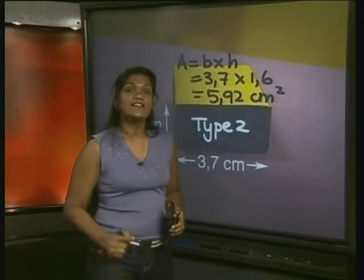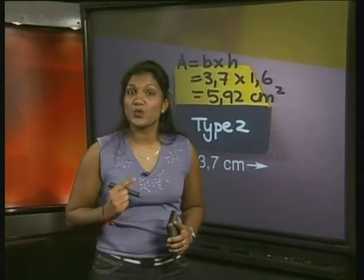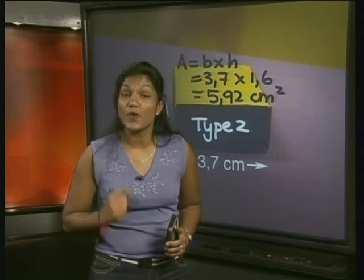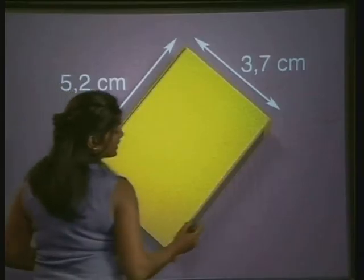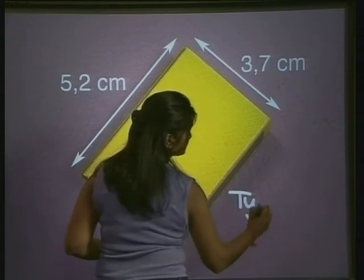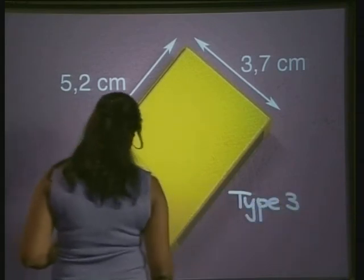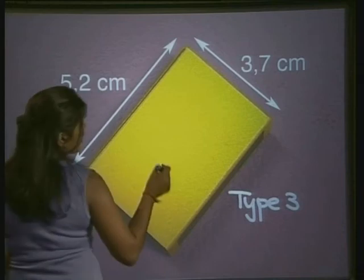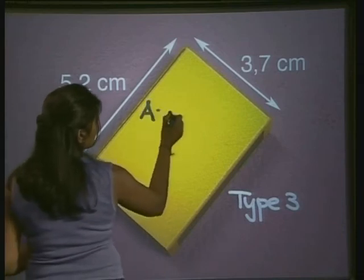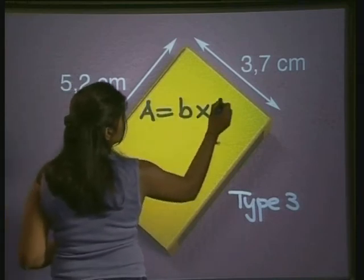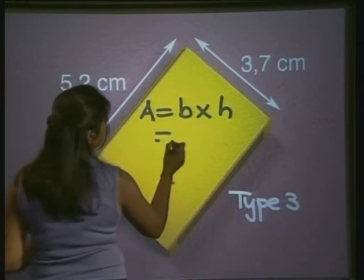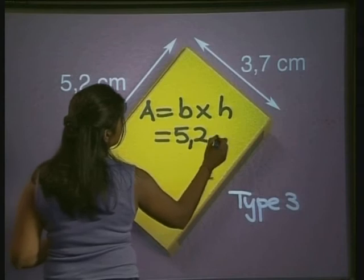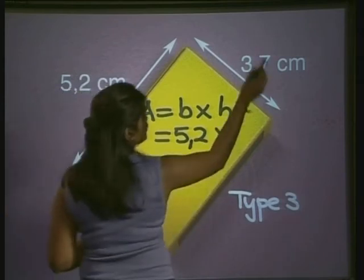Right. There is one more type of surface to work out: the top face rectangle. We'll call this rectangle Type 3. Again we write down the area of the rectangle, which is area equals base times height. And the base here is 5.2 centimeters multiplied by the height which is 3.7.